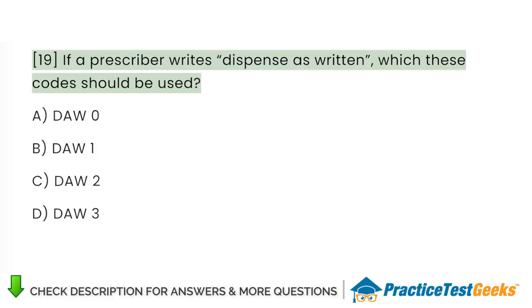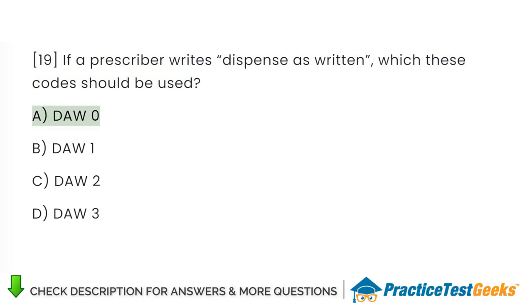If a prescriber writes 'dispense as written,' which of these codes should be used? A. DAW 0. B. DAW 1. C. DAW 2. D. DAW 3.